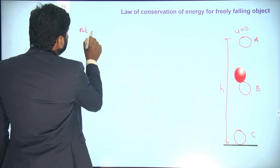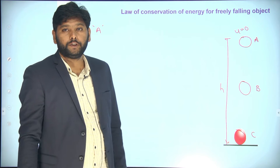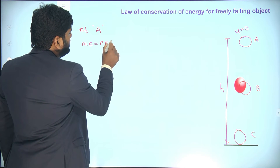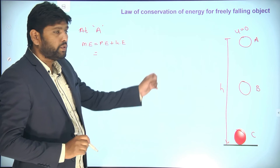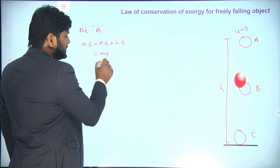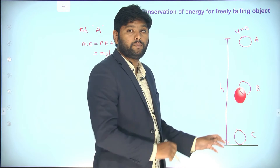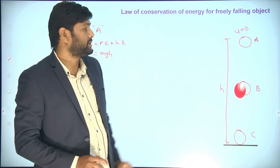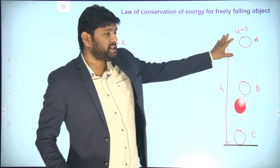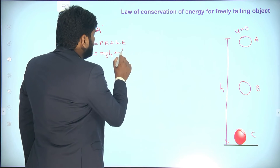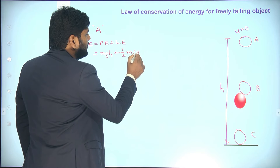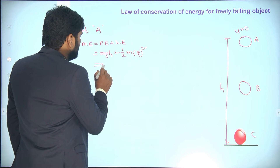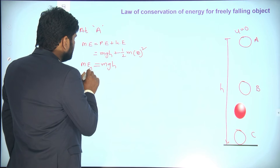At position A, we observe the total mechanical energy, which equals potential energy plus kinetic energy. At A, the total potential energy is mgh, because the object has mass m, acceleration due to gravity g, and is at height h. Initially when it is falling, its velocity is zero, so kinetic energy becomes ½mv² = ½m(0)² = 0. Therefore, the total mechanical energy at A is mgh.